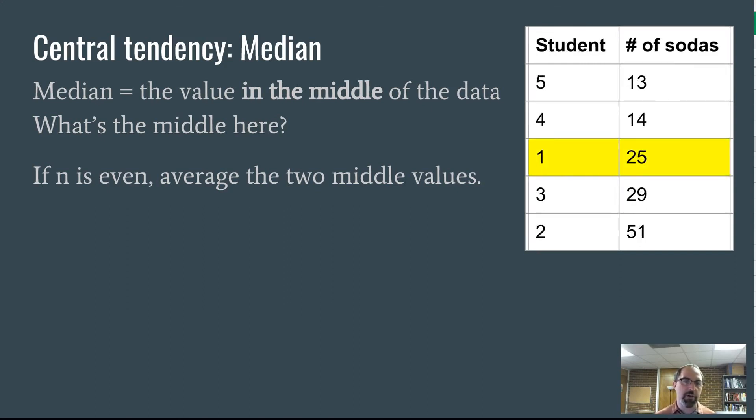In this case, we have five observations. So we take whatever one's in the middle. If we line them up from least to most, we've got 13, 14, 25, 29, 51. 25 is the median.